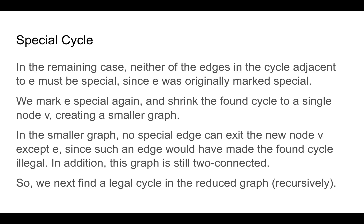And then we take that found cycle and we shrink it down to a single node which we call v. This graph is smaller. In this smaller graph, no special edge exits the node v except e. And this is because if there was such an edge, then the cycle that we found would have been illegal because there cannot be a special edge exiting a legal cycle. In addition, this reduction maintains the two-connectivity of the graph.